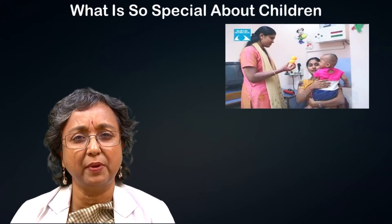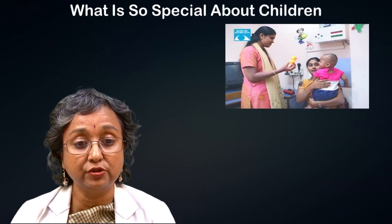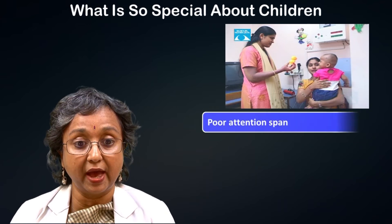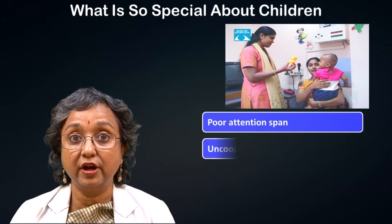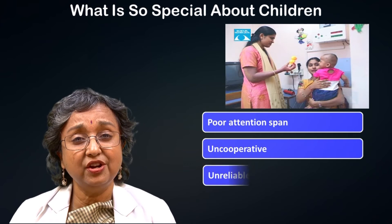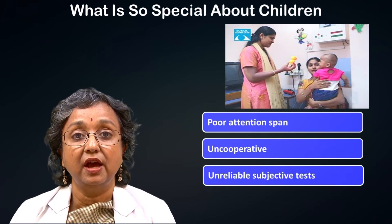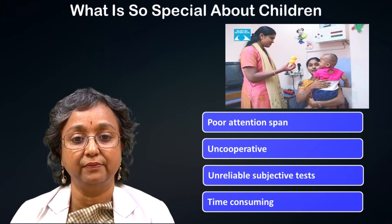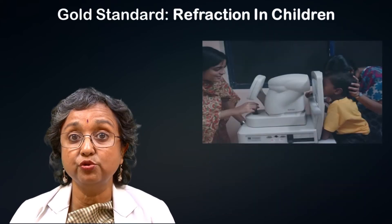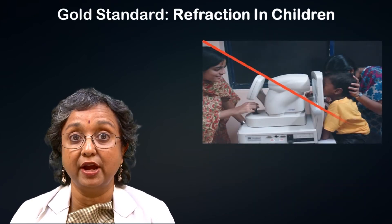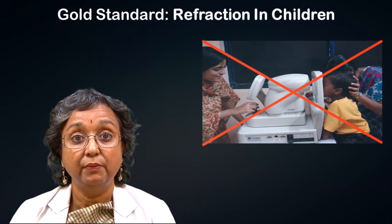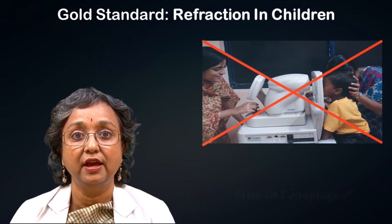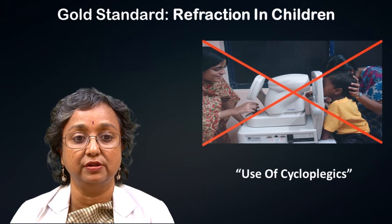What is so special and difficult about examining children? Because children have poor attention span, they are uncooperative, and they are unreliable at subjective tests, making examination time consuming. Do not rely on automated refraction in a child — the gold standard for refraction in a child is a cycloplegic refraction.